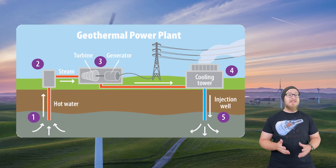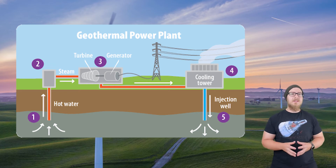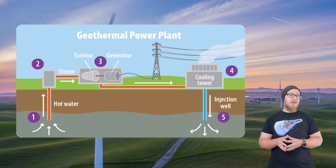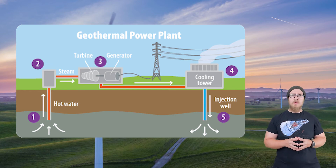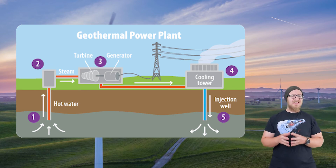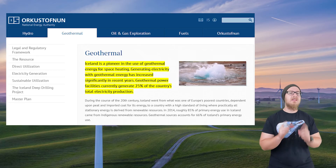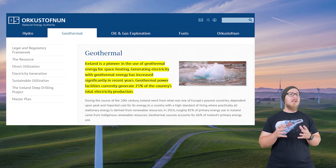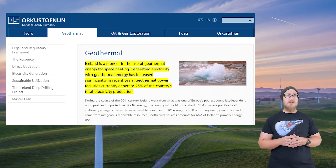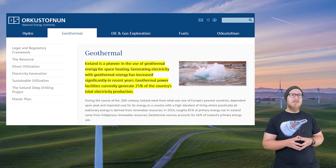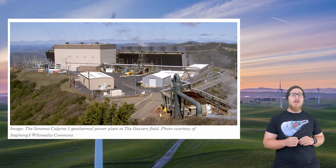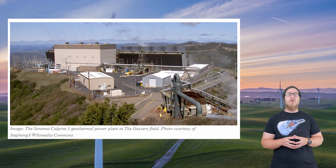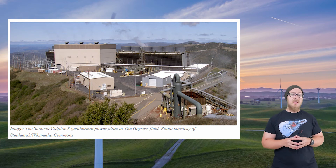Geothermal energy is obtained by using the heat stored deep in the Earth's interior to heat up water, which is brought back up as steam to spin a turbine. The cost of accessing geothermal energy can be prohibitively expensive and is not easily accessible in much of the world. Iceland, however, is a pioneer in geothermal energy use because of how geologically active the region is — about 25% of Iceland's total electricity comes from geothermal. The largest user of geothermal, however, is the United States, especially in California and other areas with significant geologic activity.